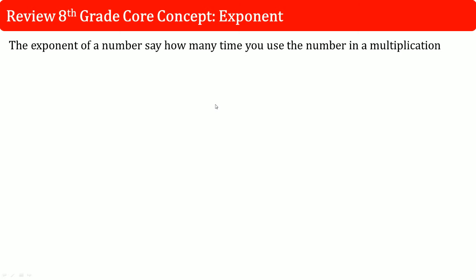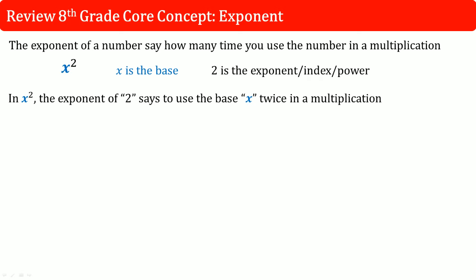We'll review an eighth grade core concept. The exponent of a number shows how many times you use that number in a multiplication. So you might see something like x squared. Here the base is x and 2 is the exponent, also referred to as the index as well as the power. You could say x to the power 2, x exponent 2, or x squared. In x squared, the exponent of 2 says to use the base x twice in a multiplication, so x squared equals x times x.